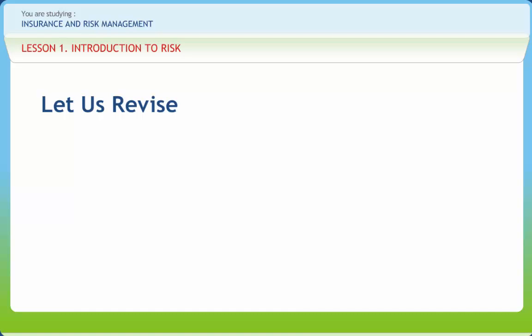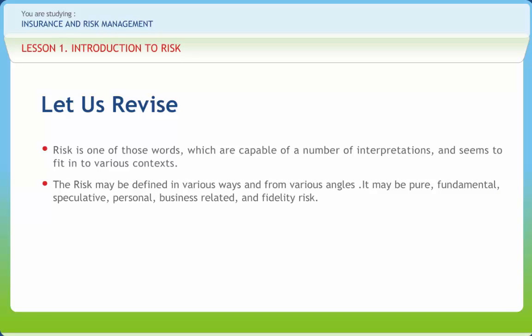Before we end, let us briefly revise what we have studied so far. Risk is one of those words which are capable of a number of interpretations and seems to fit into various contexts. Risk is nothing but the uncertainty of loss. Almost everything that the businessman does is in an uncertain environment. The second thing that encompasses us in the study of risk is its quantification. In measuring risk we are really trying to place some value on our belief as to the likelihood that some event will or will not take place.